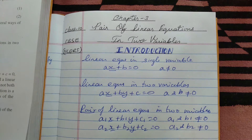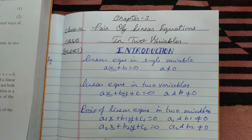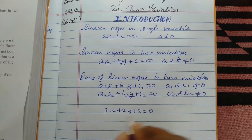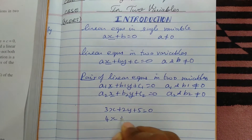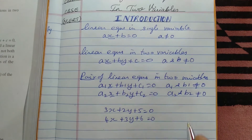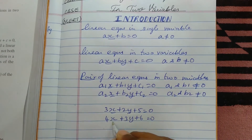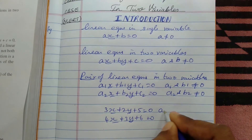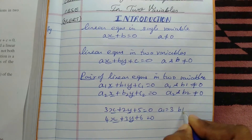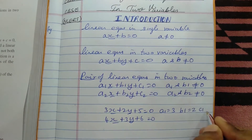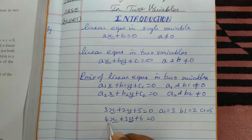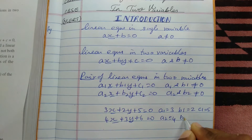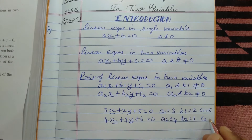For example, take the equations 3x + 2y + 5 = 0 and 4x + 3y + 6 = 0. Here x and y are the variables. For the first equation: a1 = 3, b1 = 2, c1 = 5. For the second equation: a2 = 4, b2 = 3, c2 = 6.